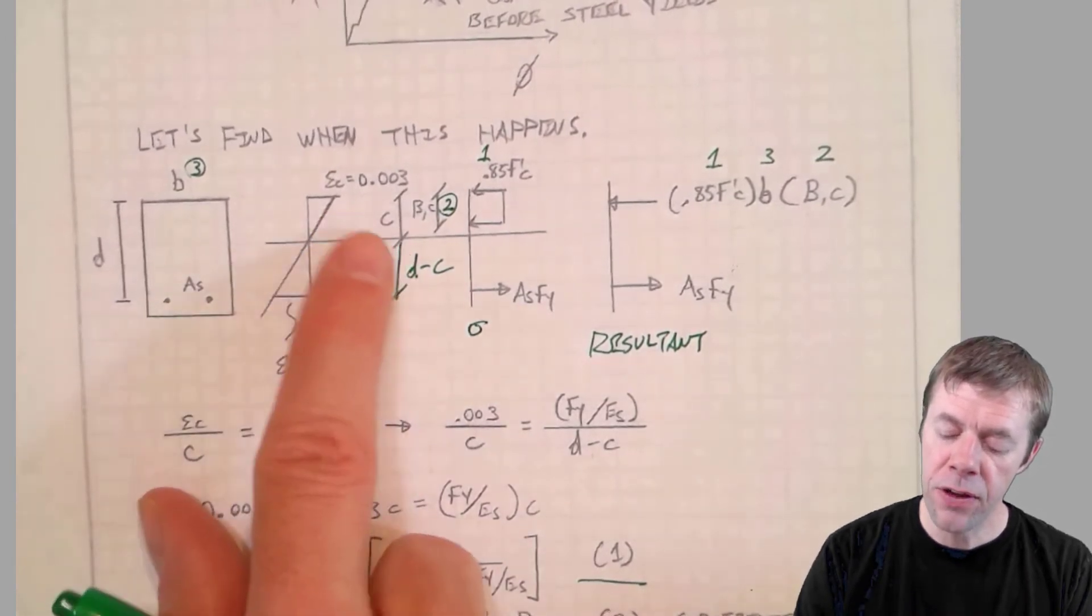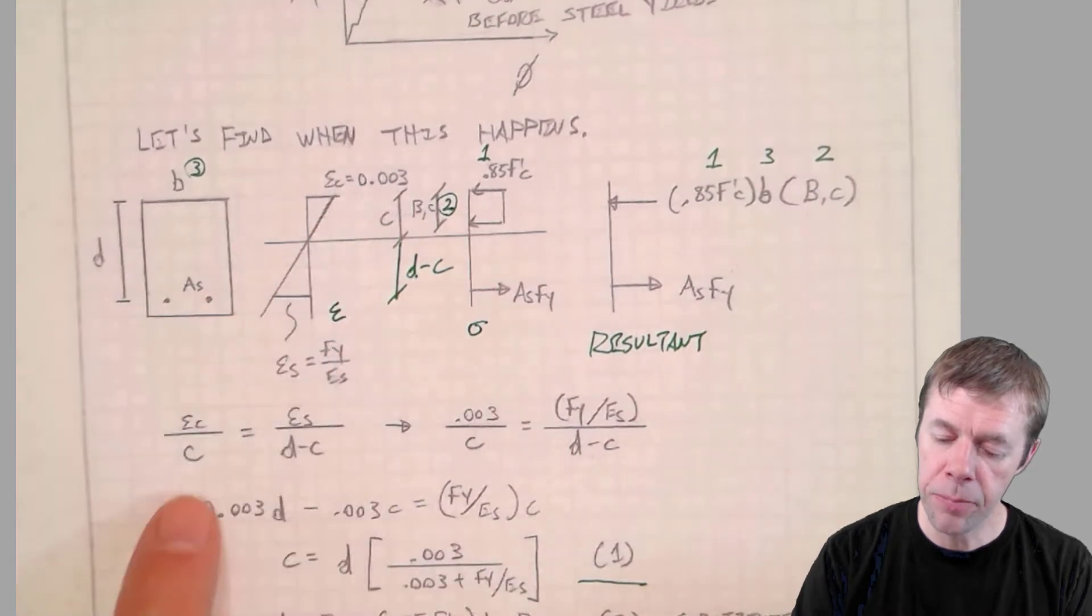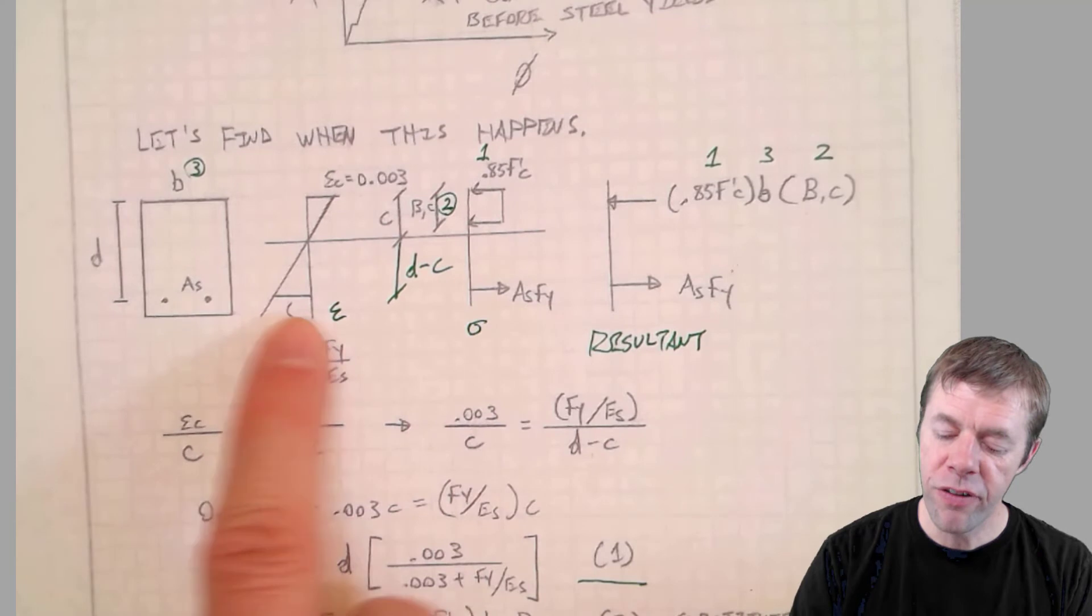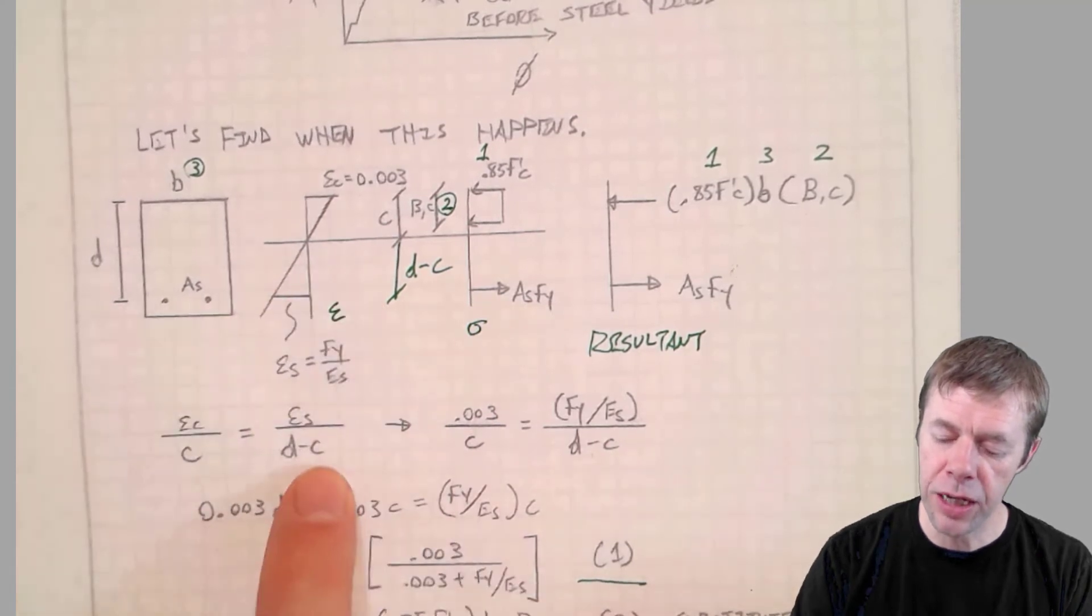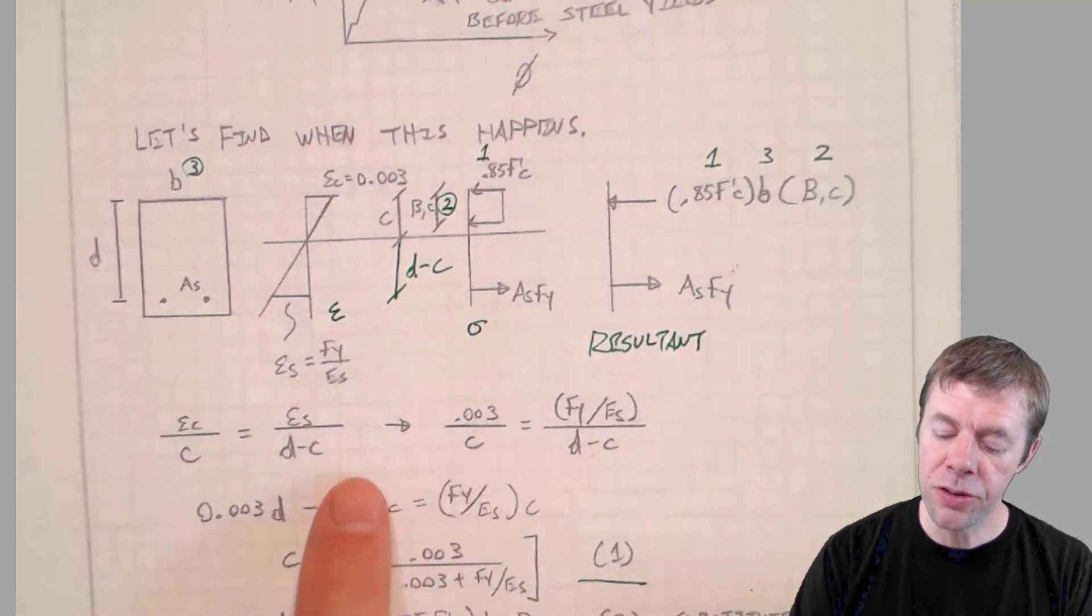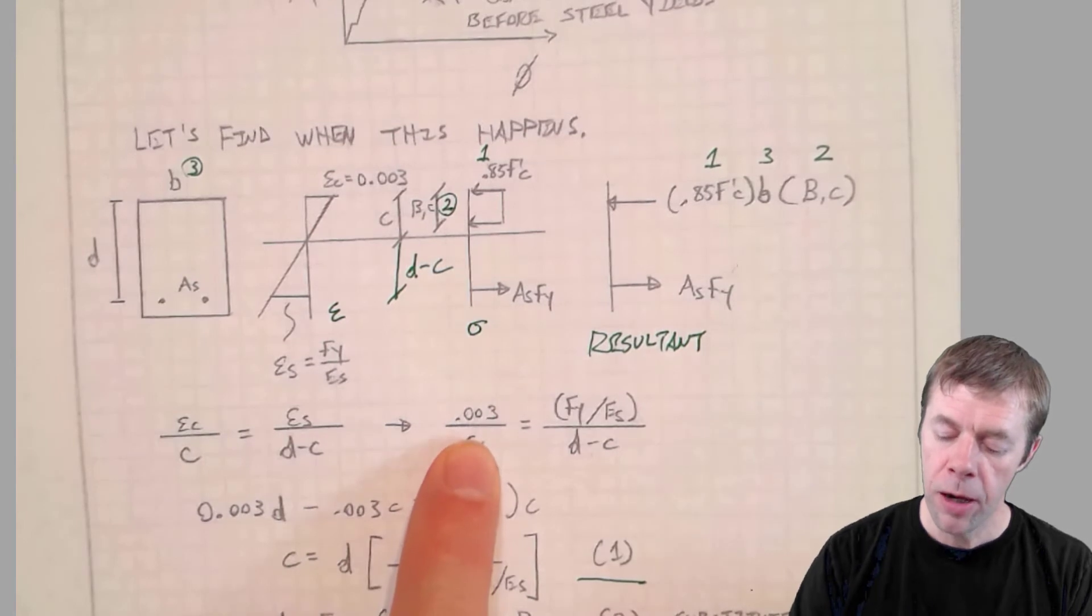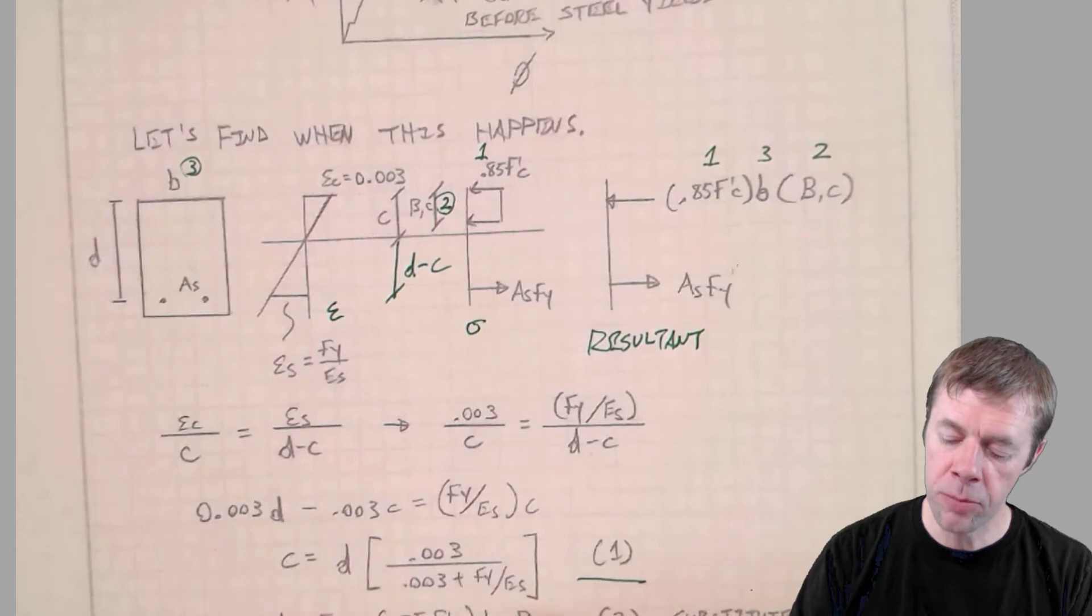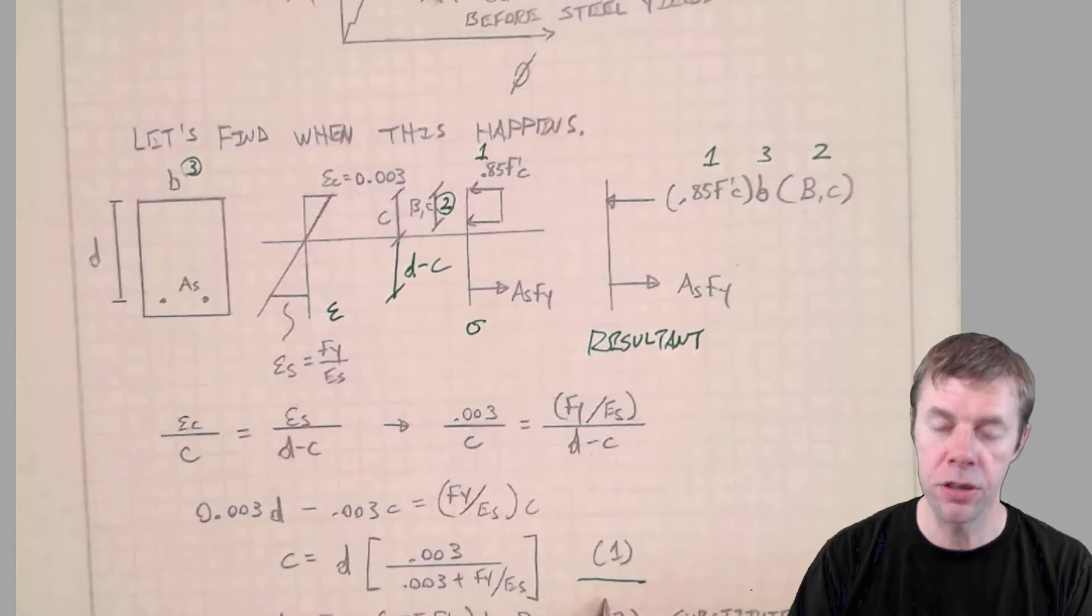And what we're going to do is we're going to find the area of the block and then multiply by the width because we're trying to find the volume, the volume of the block. So we take dimension one, which is 0.85 times F prime C. We take dimension two, which is beta 1 times C. Then we take dimension three, which is the width of the beam. We multiply all those together and we got the resultant. Now we can use similar triangles to get this equation. This is just the strain in the concrete divided by C. This is the strain in the steel divided by this dimension, D minus C. Now I'm going to simplify. I'm going to put in 0.003 here. I'm going to do a little bit of algebra and I get this to be equation number one.